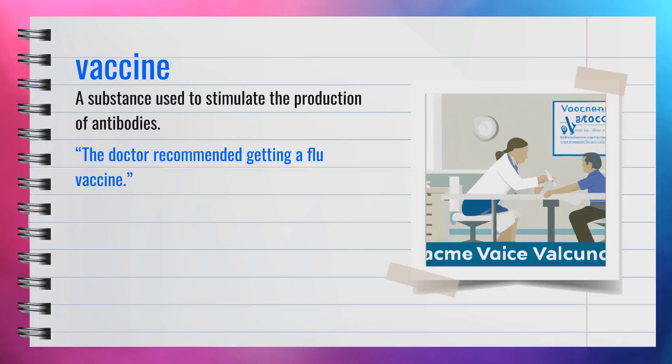The word vaccine is a noun, spelled V-A-C-C-I-N-E. Synonyms include immunization and inoculation. For example, the doctor recommended getting a flu vaccine. In summary, a vaccine is a substance used to stimulate the production of antibodies.